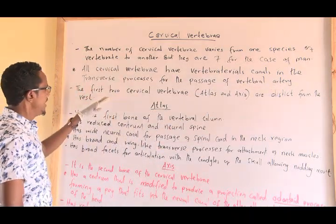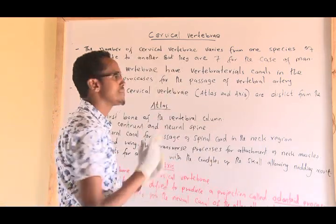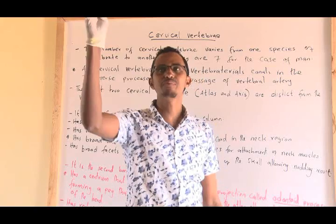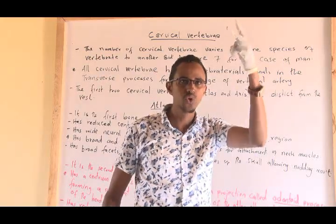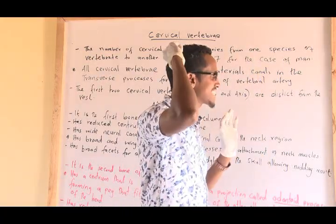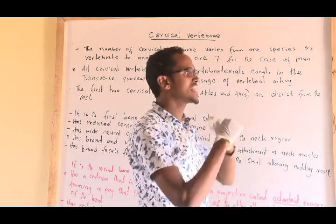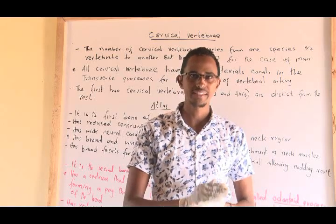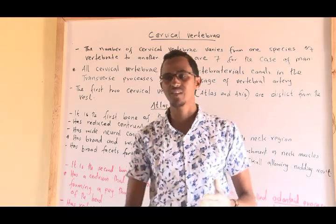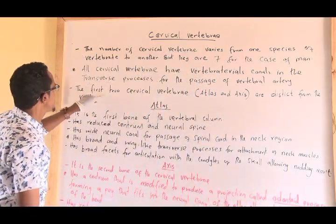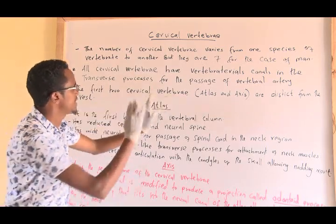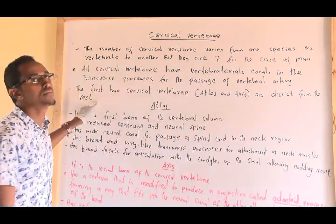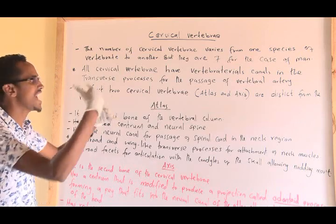There are seven cervical vertebrae, but the first two are distinct from the others. The first one, immediately after the skull, is called the atlas, and the one that follows the atlas is called the axis. These two are different — they have some uniqueness that distinguishes them from the other five cervical vertebrae.